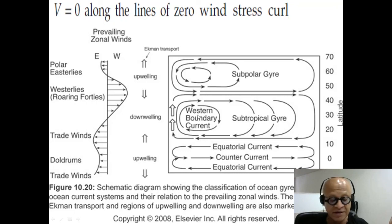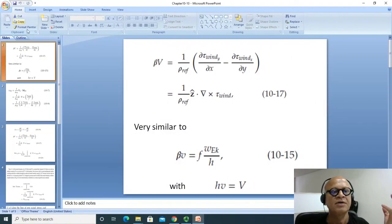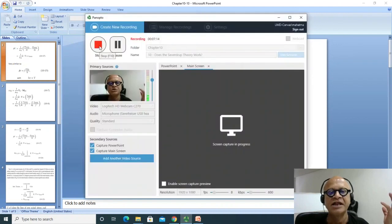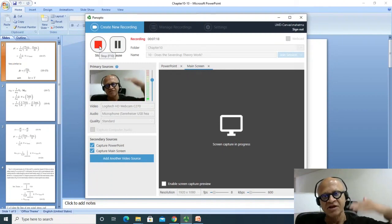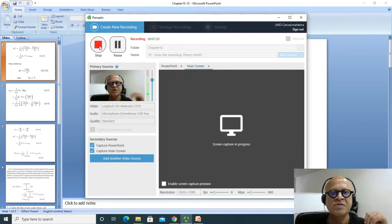That should convince you that even though it's a very simple dynamic derivation, the Sverdrup theory gives you very realistic gyre circulation. Of course, there are limitations because the motion at the deep ocean has to be negligible for Sverdrup theory to be able to be integrated from the top to the bottom.